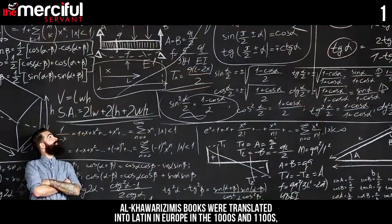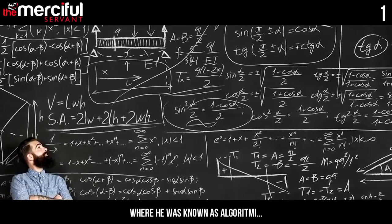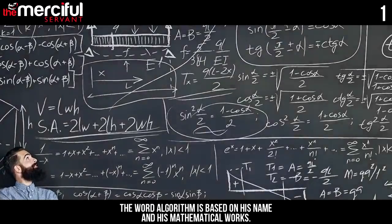Al-Khawarizmi's books were translated into Latin in Europe in the 1000s and 1100s, where he was known as Algorithmi. The word algorithm is based on his name and his mathematical works.